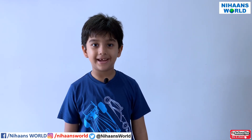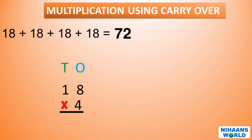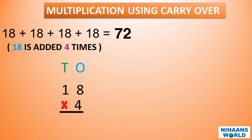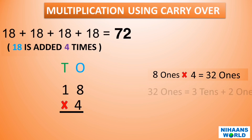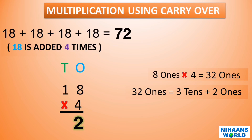Friends, now let us learn multiplication using carry over. 18 is added 4 times. Let us multiply 18 by 4. Write the digits according to place value. 8 ones multiplied by 4 is equal to 32 ones. 32 ones is equal to 3 tens plus 2 ones. Write 2 under the ones column and carry over 3 to the tens column. 1 ten multiplied by 4 is equal to 4 tens. Add the carry over: 3 tens plus 4 tens is equal to 7 tens. Write 7 in the tens column. So 18 multiplied by 4 is equal to 72.